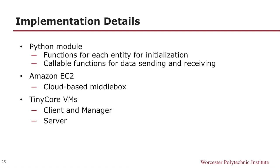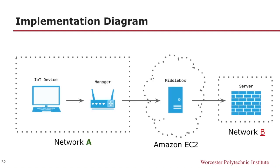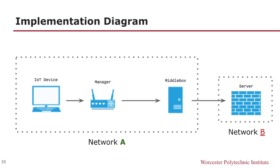For implementation of our protocol, we designed and created a Python library. This module has functions for each entity's initialization and data sending. We used an Amazon EC2 instance to hold the cloud-based middlebox for our testing. We used TinyCore VMs for the remaining components. The client and manager ran on one device, with the server on another, so that we can mimic a real IoT device connection across networks. We tested with the client and manager in one network and the server in another, with the middlebox in an Amazon EC2 instance for the cloud-based middlebox scenario. We also tested the performance with a locally-based middlebox, where the middlebox was in the same home network as the client and manager.